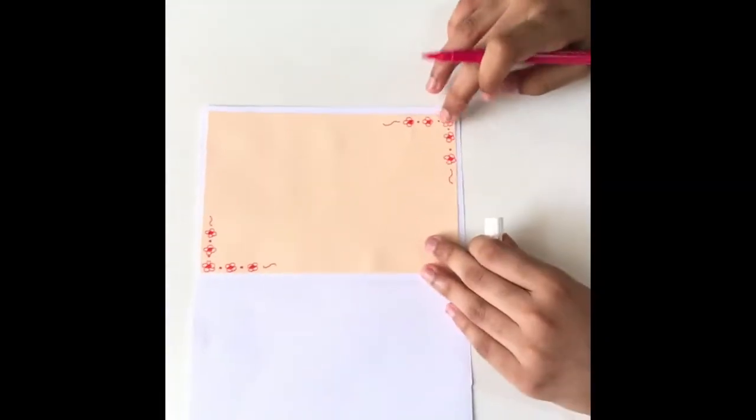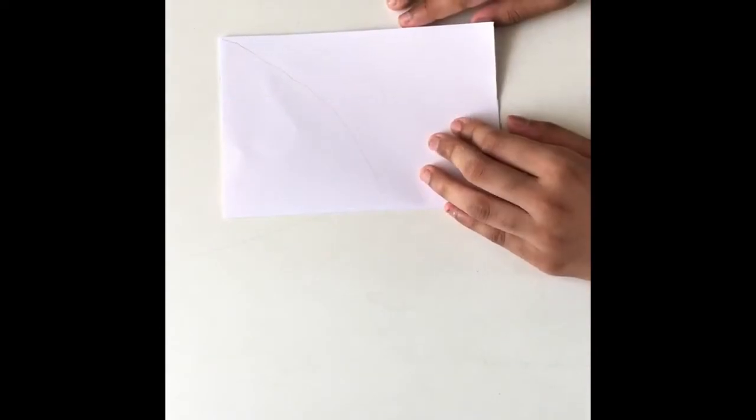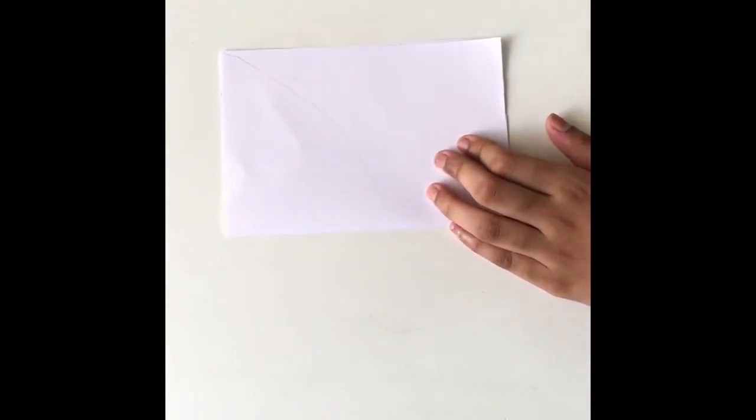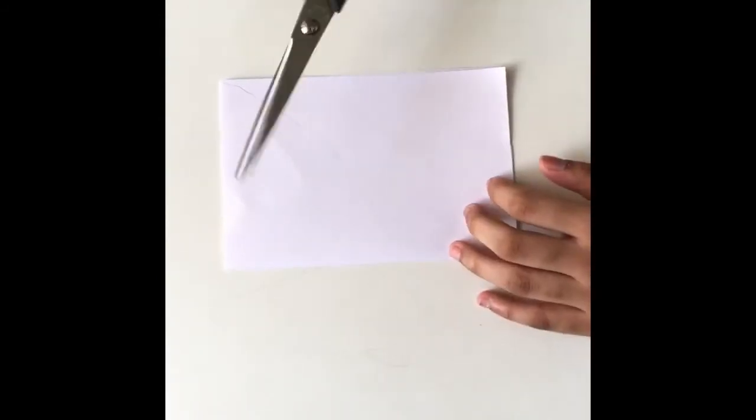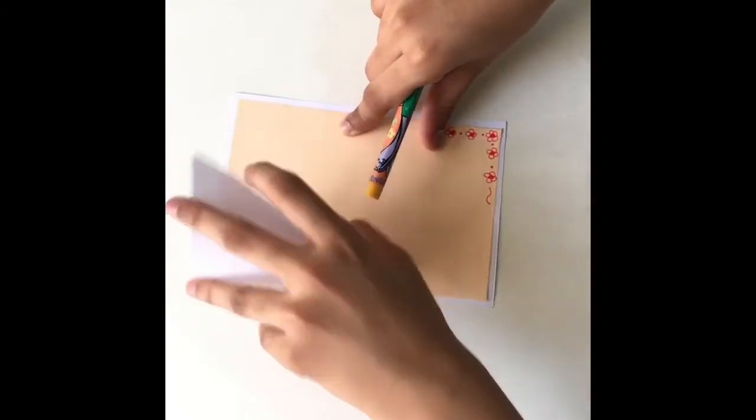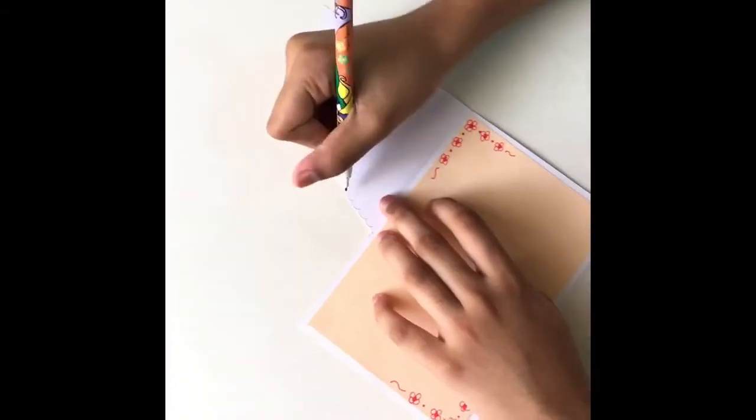Same way, you have to repeat it down also. Now close it and draw a curve line over here and take the scissors. It's cutting time.